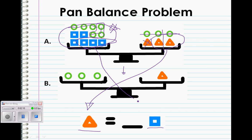Well, that's our answer. Now we just have to fill it in. Three. So our solution to the problem is that three squares is equal to one triangle.